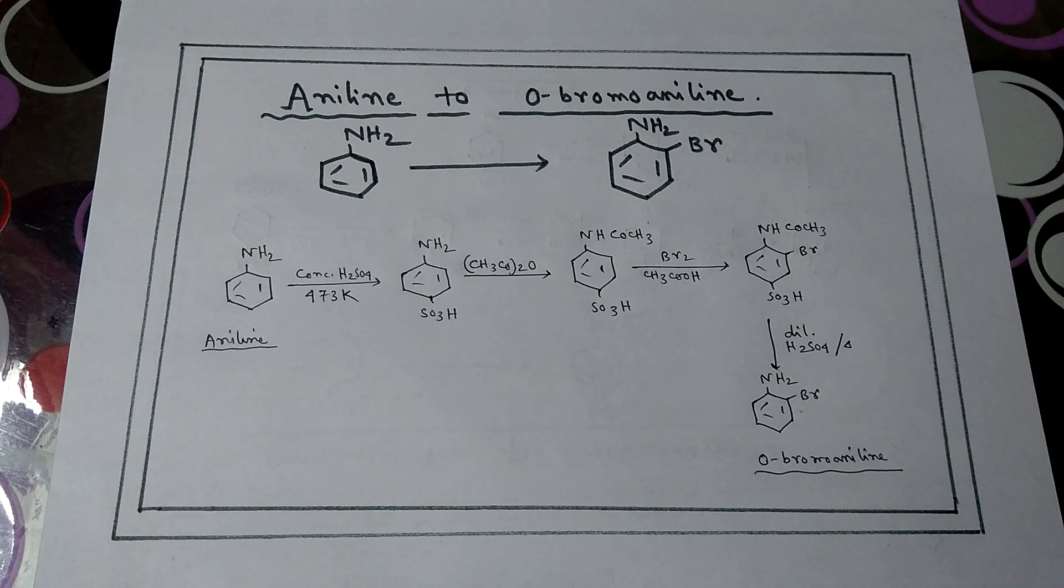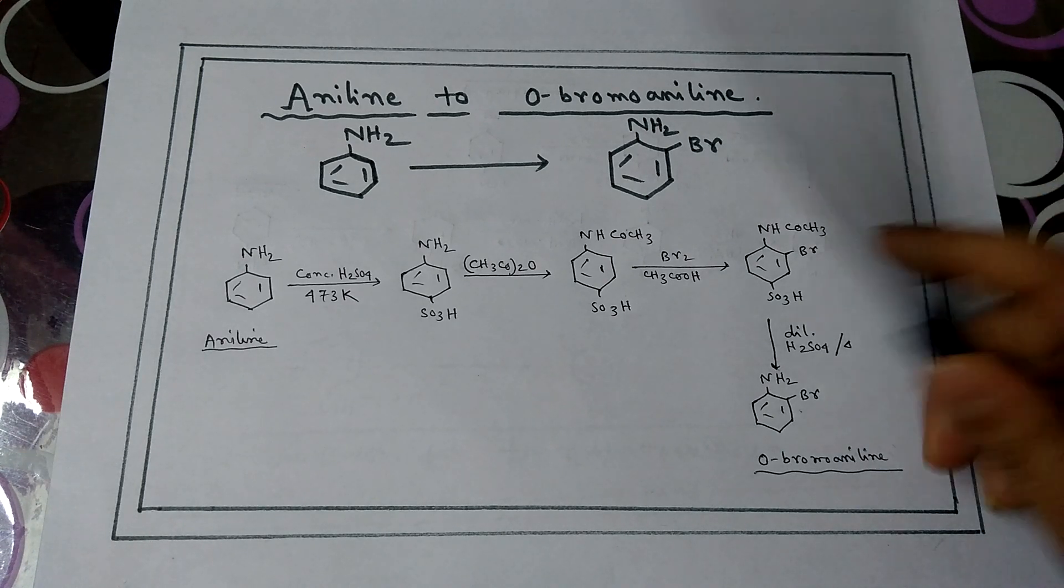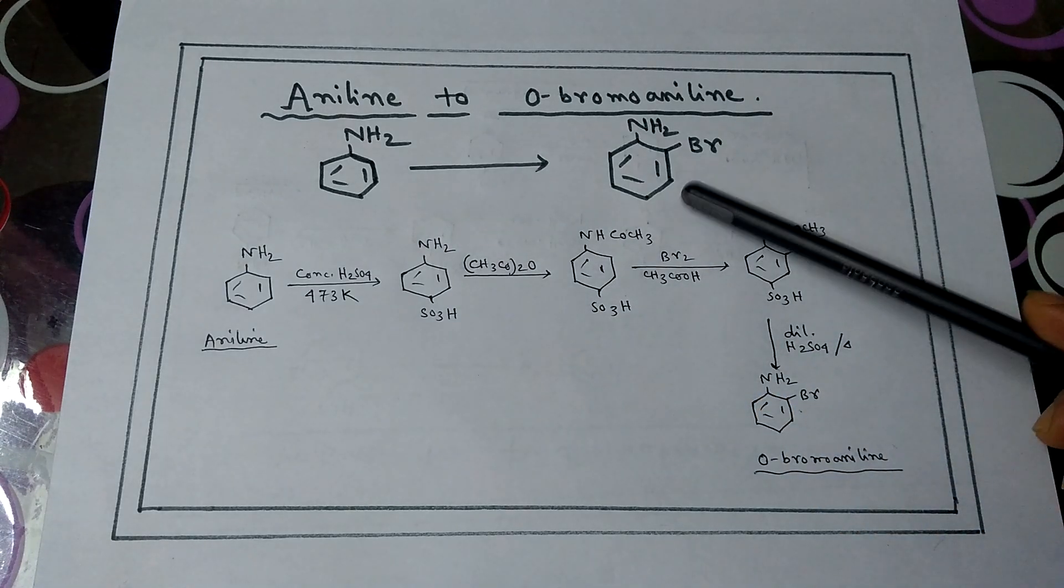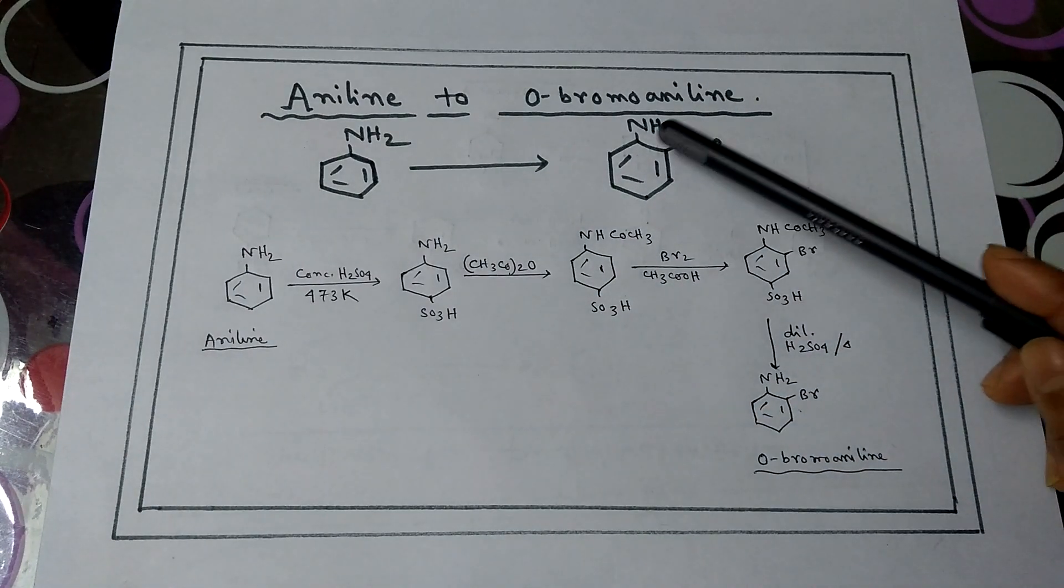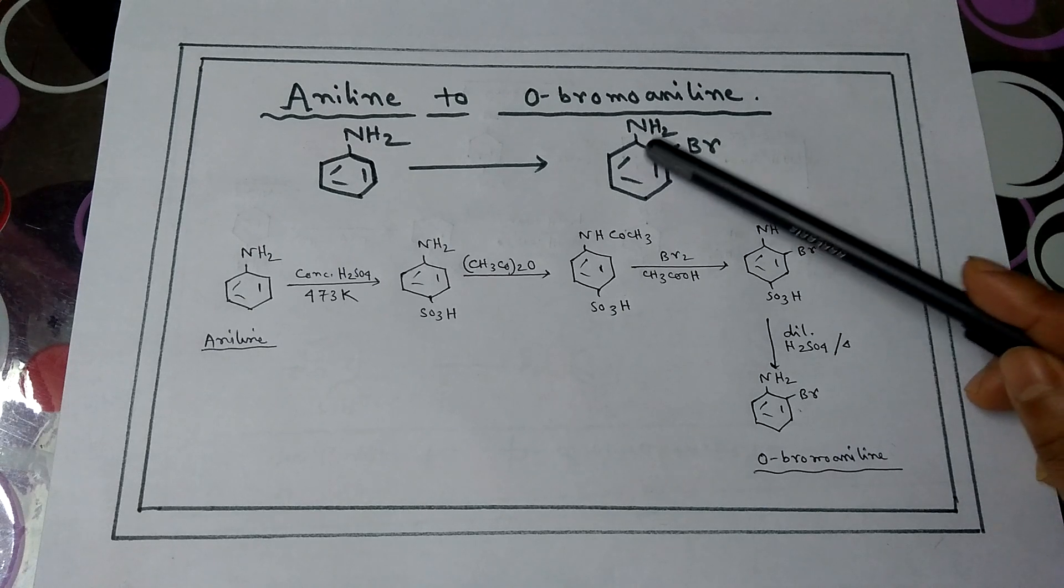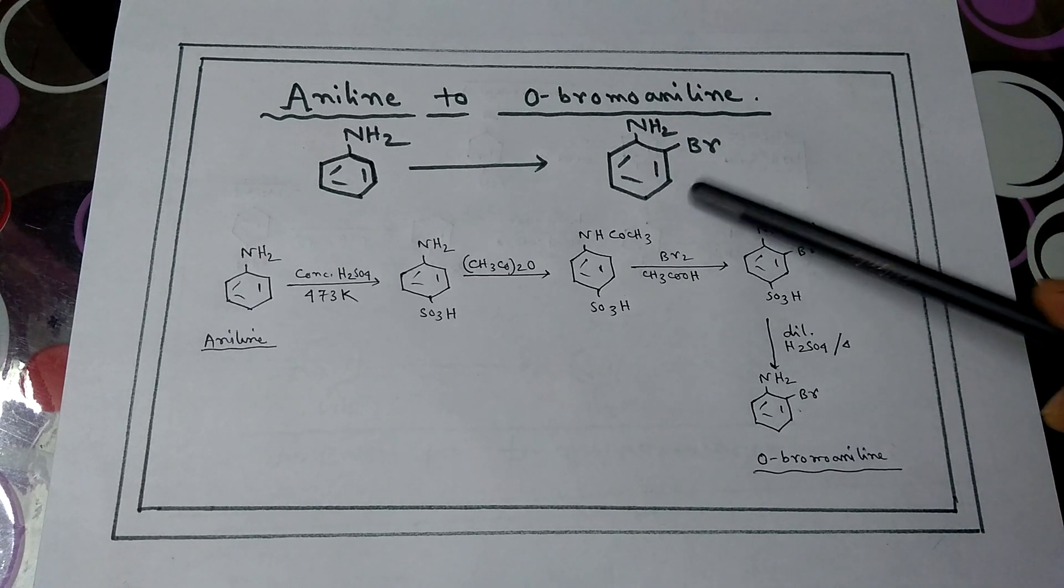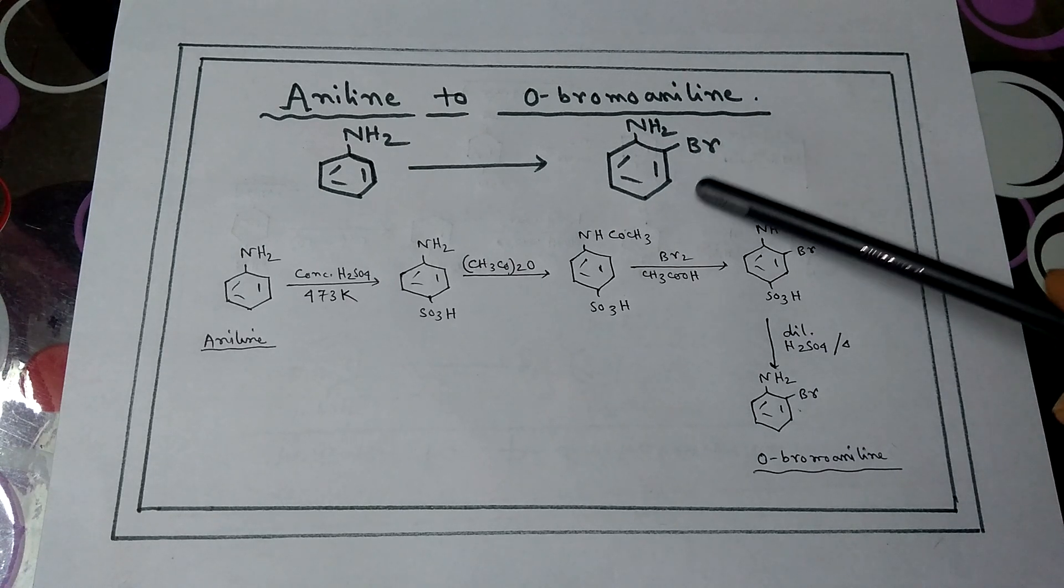Welcome to my channel, Chemistry Principles. Today I'm going to discuss how to convert aniline to orthobromoaniline. Aniline has a benzene ring with NH2 group, and orthobromoaniline has aniline with NH2 and bromine at the ortho position. The pathway is as follows.